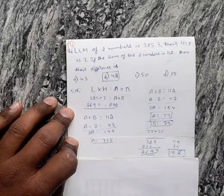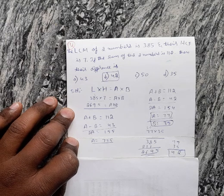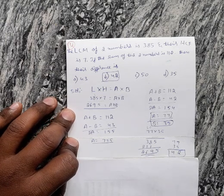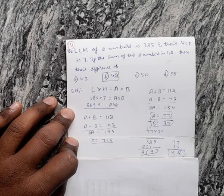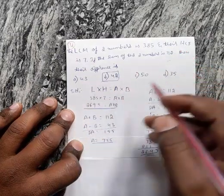Question number 4. The LCM of two numbers is 385 and their HCF is 7. If the sum of two numbers is 112, then their difference is? Here they are given: LCM and HCF and their sum.